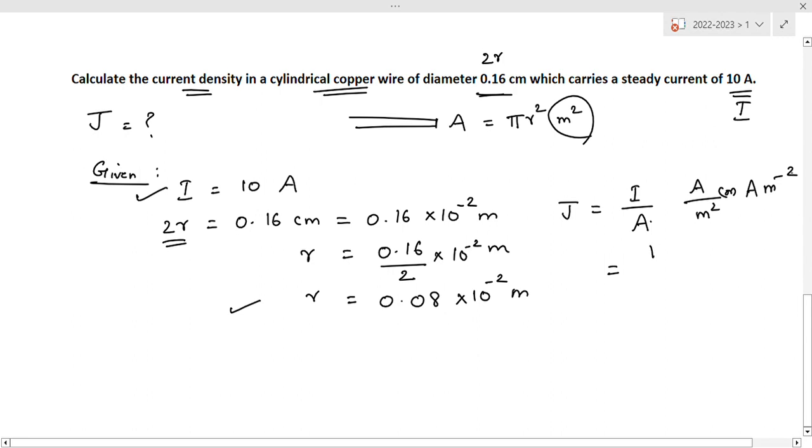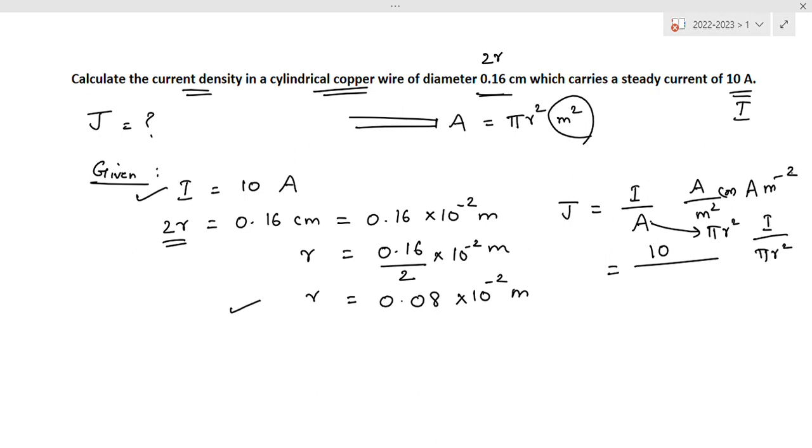Substitute formula. I by pi r square, so I by pi r square, this is the formula. Pi 3.14, r 0.08 into 10 power minus 2 the whole square.